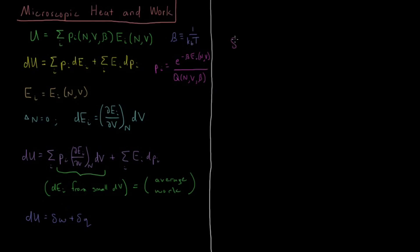So we're going to say for a reversible process, the differential of reversible work is sum of the probability of N V beta times partial E with respect to V times dV. And because this term plus this term equals dU and this term is work, we know the only other thing that can be left is heat.